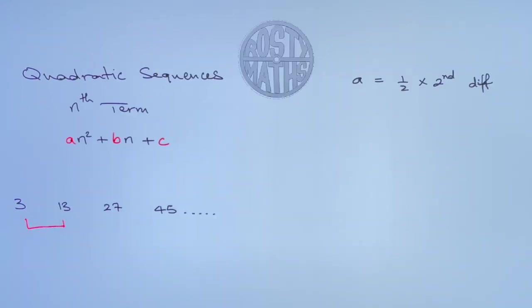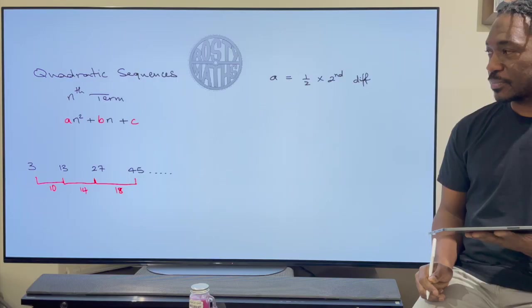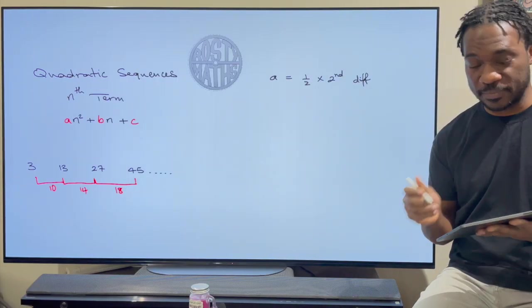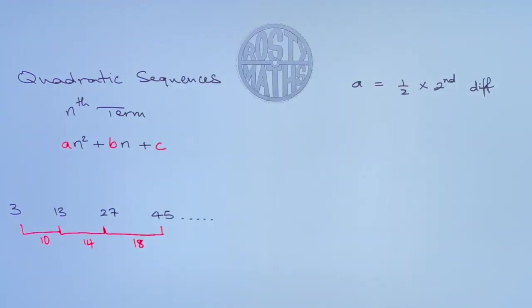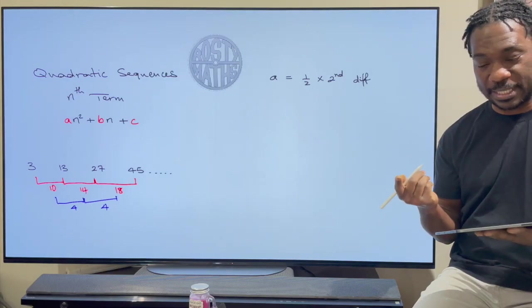So this is the first difference here. So we have a difference of 10 there. We have a difference of 14 here and we have a difference of 18 there. So that's the first difference. Now we go and find the second difference and to find the second difference we have a difference of 4 here and a difference of 4 there. That's the second difference.